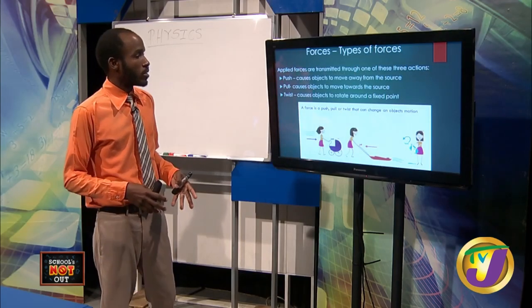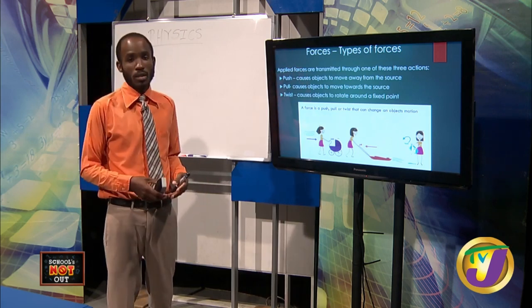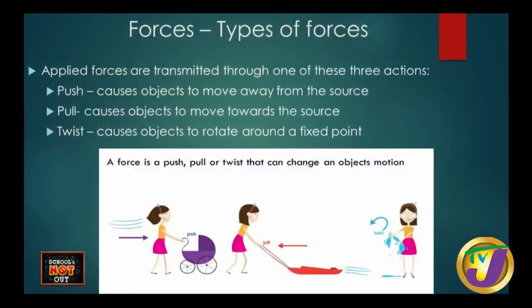Forces can be transmitted through one of three actions: push, pull, or twist. Pushing causes the object to move away from where the force is applied; pulling moves it towards the source. Twisting causes the object to spin or rotate about a fixed point. As the diagram shows, a person pushes a pram, pulls an object, and twists a rug — push, pull, and twist are the ways forces are applied.